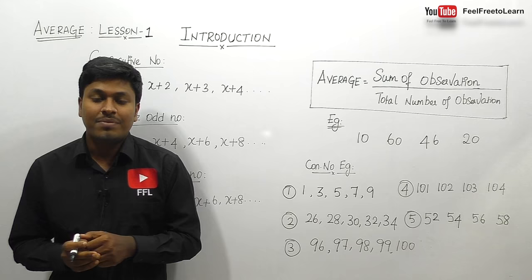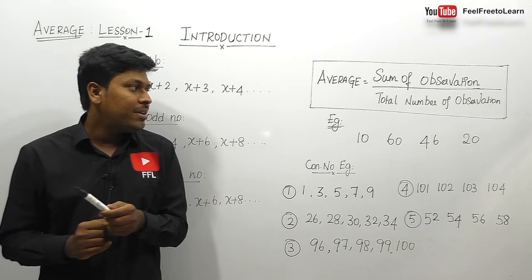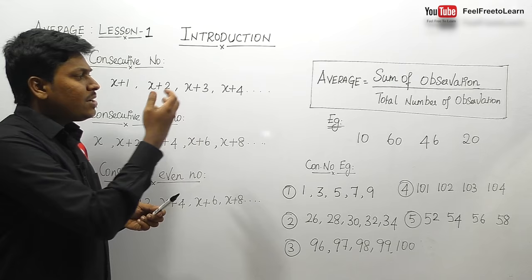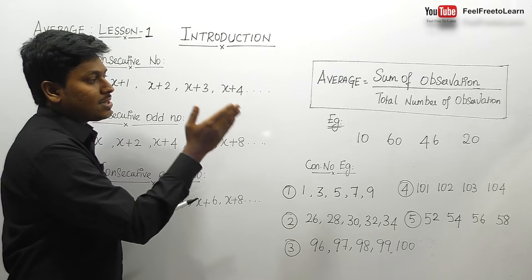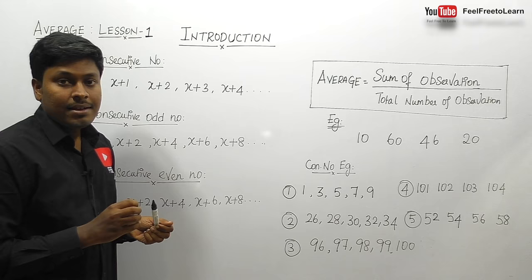In this lesson number one, we are going to learn an introduction on the topic called average. Everyone preparing for competitive exams likely knows how to find an average. Average is equal to sum of observations divided by total number of observations. For example, to find the average of 10, 60, 46, and 20, we add all the numbers — 10 plus 60 plus 46 plus 20 — and divide by the total number of observations, which is 4.